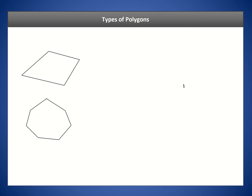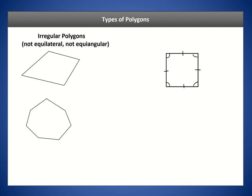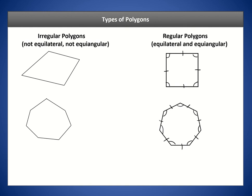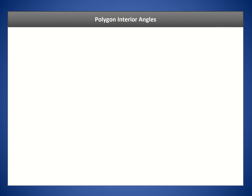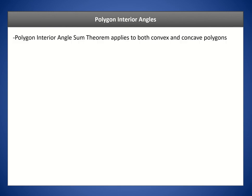We also said these polygons were irregular — the sides are not the same measure and the angles are not the same measure. Compare this to a square, which is a regular quadrilateral: all angles are 90 degrees and all sides are congruent. Comparing the irregular heptagon to the regular heptagon, a regular polygon has all sides congruent and all angles congruent — it is both equilateral and equiangular.